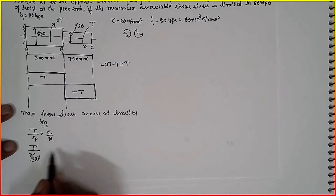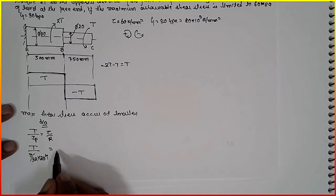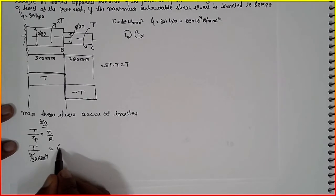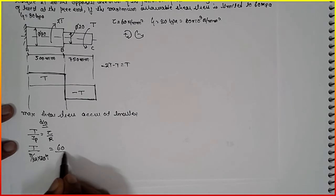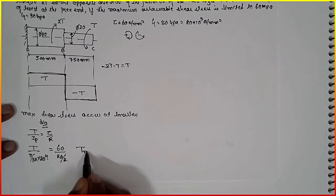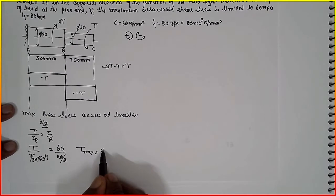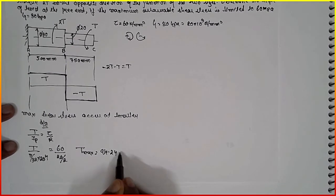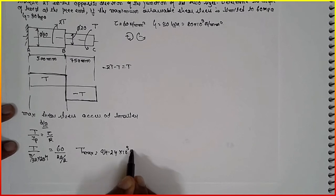Now smallest D raised to 4 diameter is 60 divided by 20 divided by 2. If you calculate, the T max will be 94.24 into 10 raised to 3 N per mm.